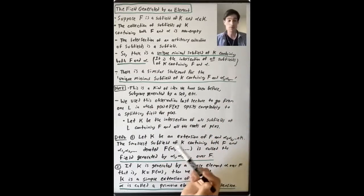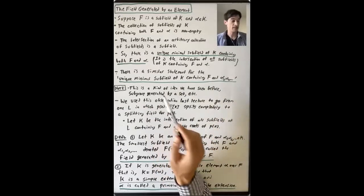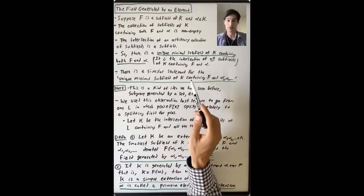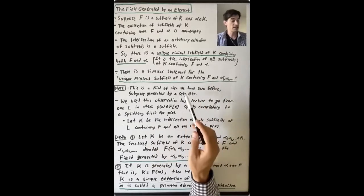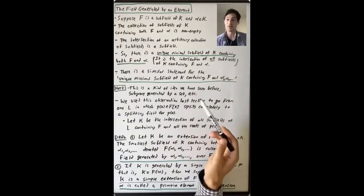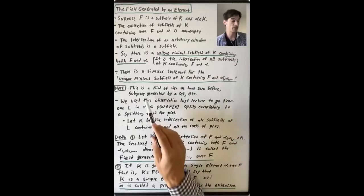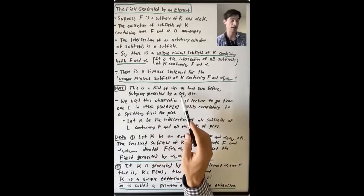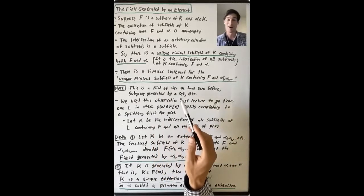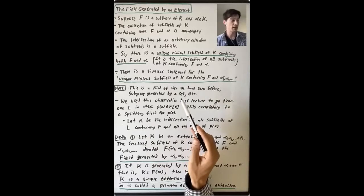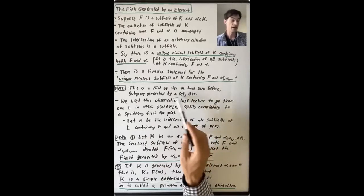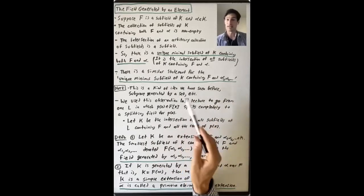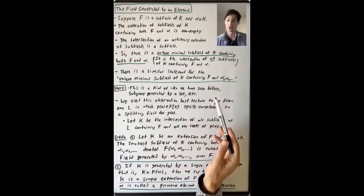I want to point out that this is going to be important going forward. This is a kind of idea that we've seen quite a bit before: the subgroup generated by a subset, or the ideal generated by a subset, the submodule generated by a subset. This fits into that framework for sure.